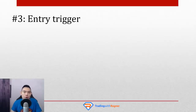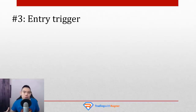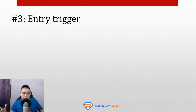First thing first, number one — remember market structure. What is it? Well, in essence, market structure tells you what to do. If the market is in an uptrend, you will look for buying opportunities. If the market is in a downtrend, you will look for selling opportunities. So that's what we covered: market structure, the first thing.